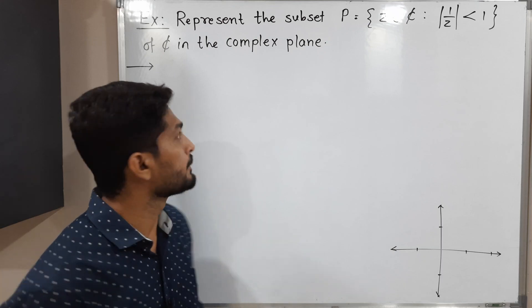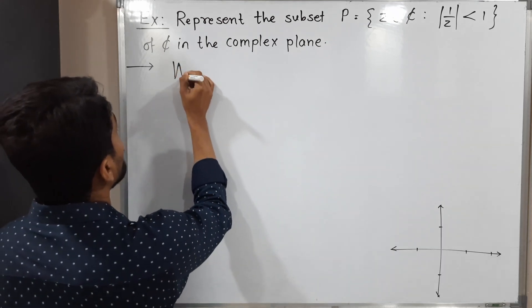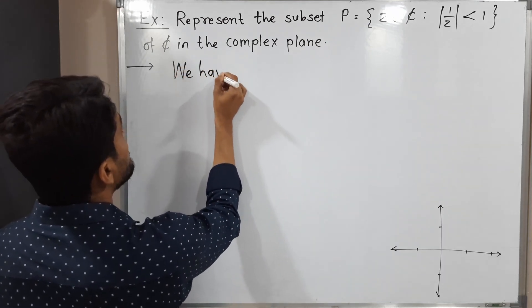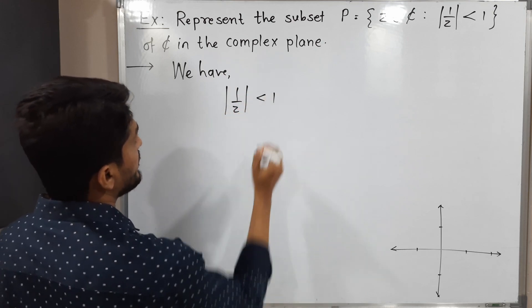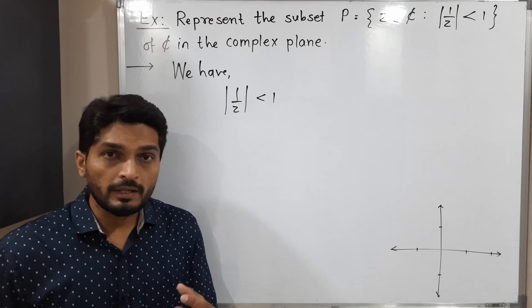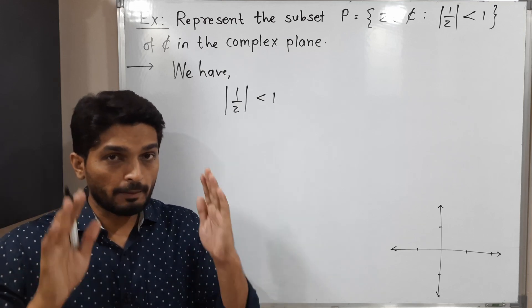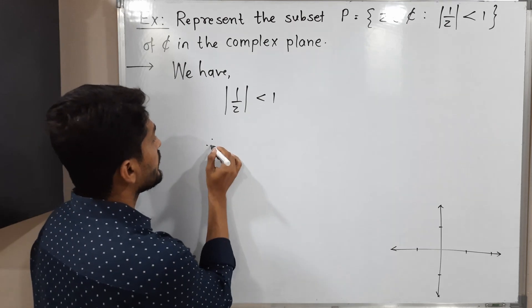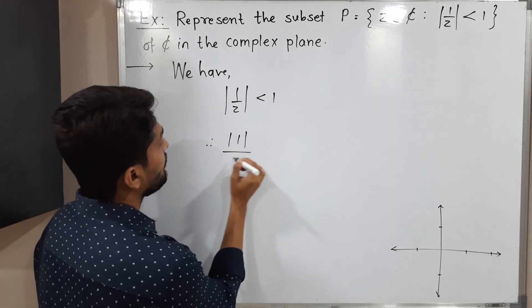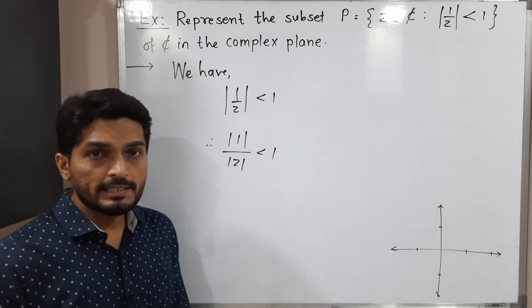Let's start by discussing that condition. We have the inequality |1/z| < 1. When we have numerator and denominator with mod, we can take separate mods. Therefore, |1|/|z| < 1. Obviously the value of |1| is 1, so 1/|z| < 1. Let us shift |z| to the other side.